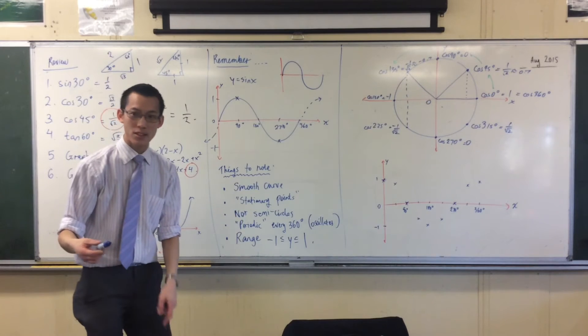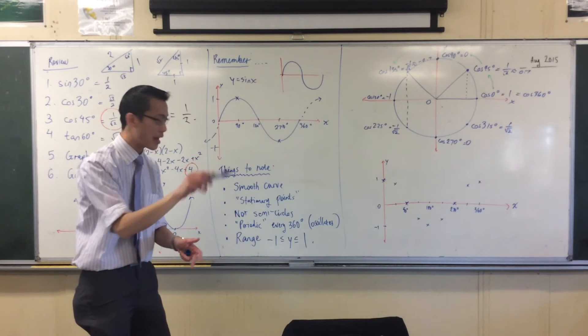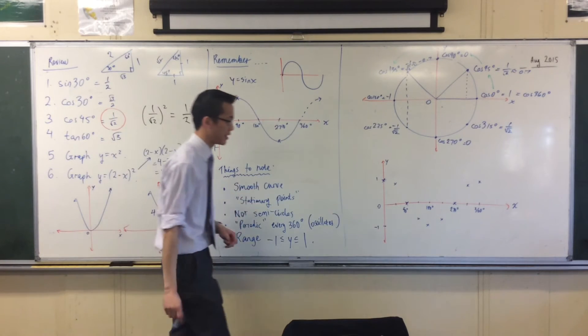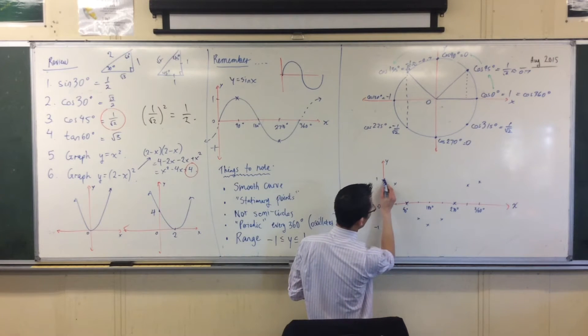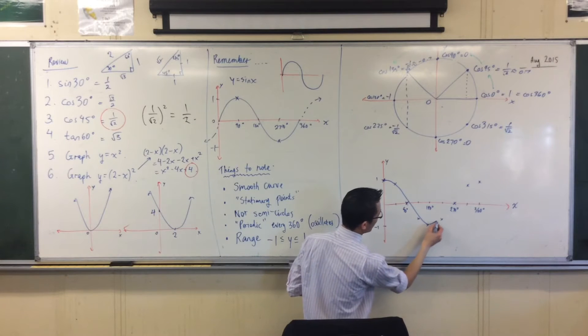Carefully, maybe lightly in pencil if you're not that confident to draw it smoothly, and then firm up when you've got a better idea. Join up these dots. What shape are we going to get? Upside down bell curve.